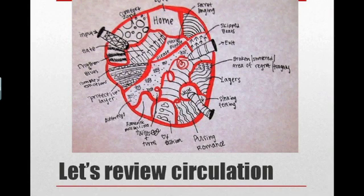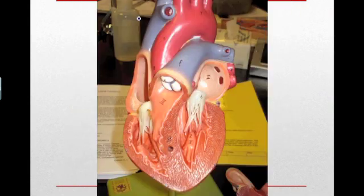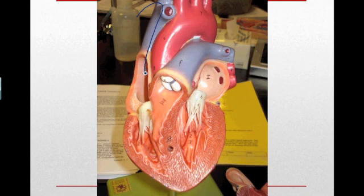Let's first do a quick little review of parts of the heart and circulation. So if you remember back, deoxygenated blood comes from the body — the upper part of the body via the superior vena cava, the lower part of the body via the inferior vena cava, and from the heart itself via the coronary sinus. It enters into the right atrium.